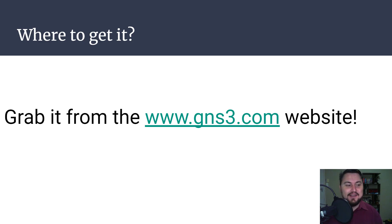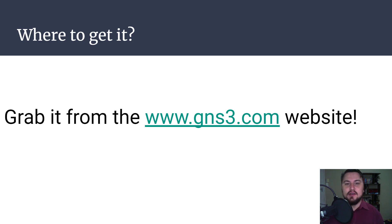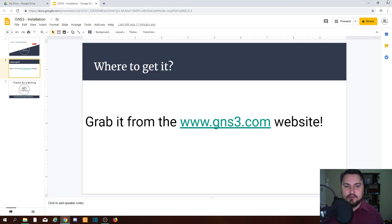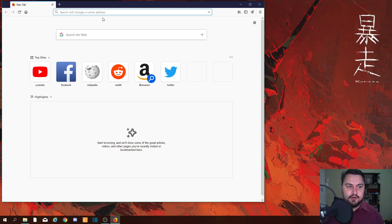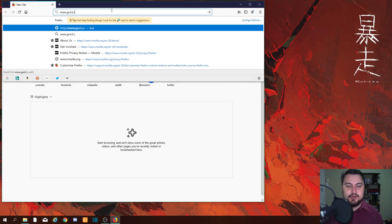So where do we get GNS3? We can get it from their website. We can go into any browser and type in www.gns3.com, or go to Google and type in gns3.com into your search bar and it will redirect you. The first hit should be their webpage, so let's go there. I'm going to close Chrome and open up Firefox, so let's go to www.gns3.com.